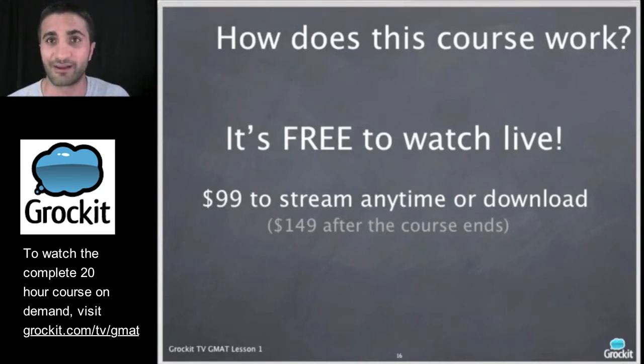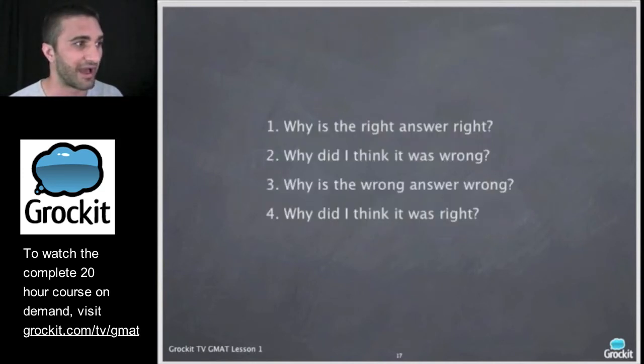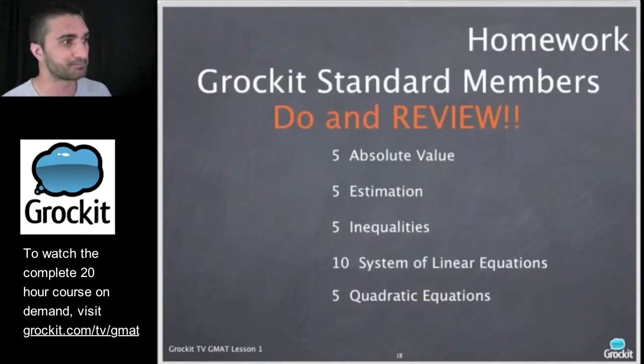So just to remind you, this course is entirely free to join us live. If you want to download or stream any of the episodes later, you can purchase them for $99. When the course ends, it's going to go up. So I'd recommend you do it now. Now, when we're working our homework for questions we get wrong, we should be going over these four questions and having a notebook where we're keeping track of the questions we get wrong and asking ourselves and answering in English. Why is the right answer right? Why did I think it was wrong? Why is the wrong answer wrong? And why did I think it was right?